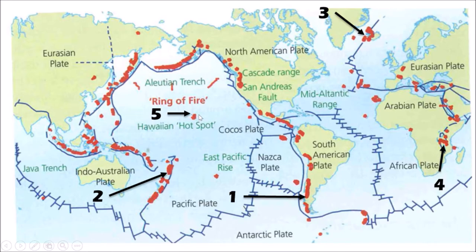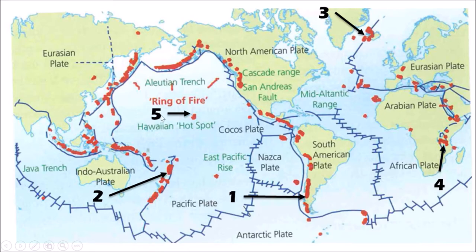A hot spot is associated with a mantle plume - an area of high heat flow within the mantle. Where that hot spot interacts with the crust, you get magma breaking through and building up to create volcanoes. As the plate moves over the top of it, those volcanoes are then taken away from the hot spot and a new volcano forms in its place. So as a result of these tectonic processes, volcanoes tend to be found close to plate margins.